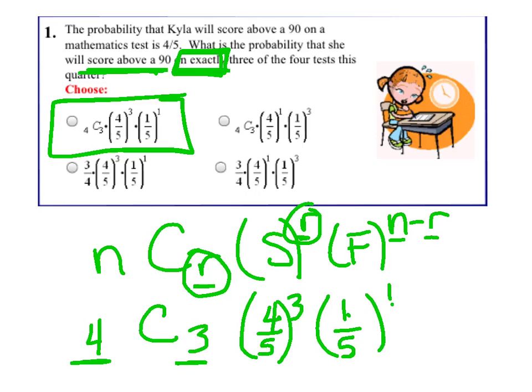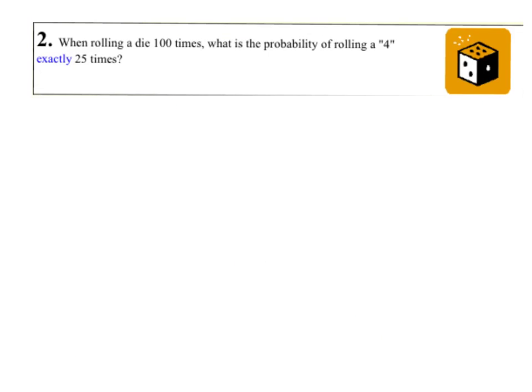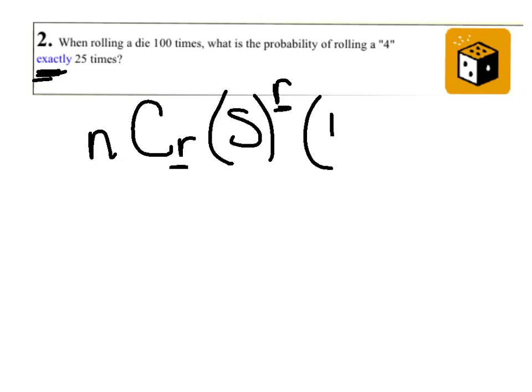Let's try another one. When rolling a die 100 times, what is the probability of rolling a 4 exactly 25 times? I put that word in blue for you on purpose here. Exactly is the keyword that triggers you to say nCr. Success to the r. Remember, those are going to match. Failure to the n minus r. Subtract those original two.